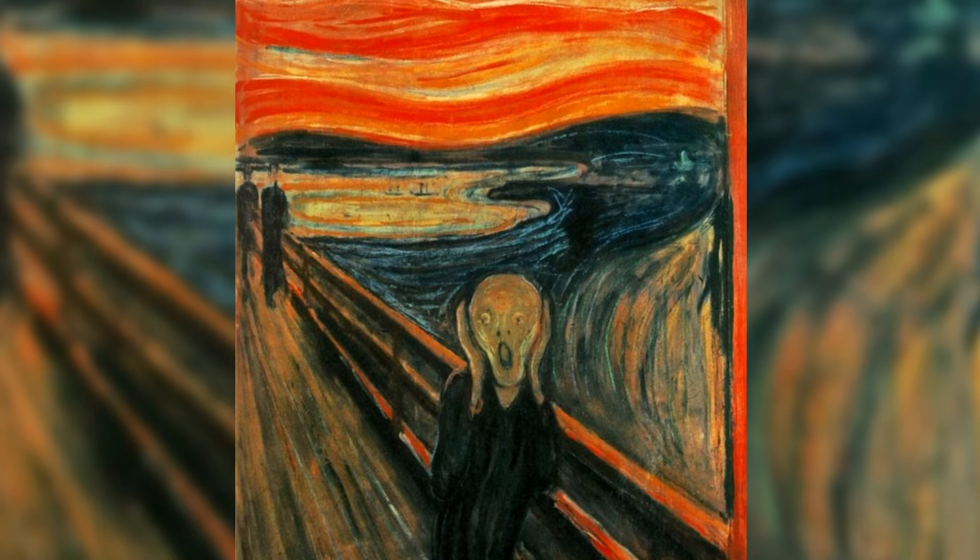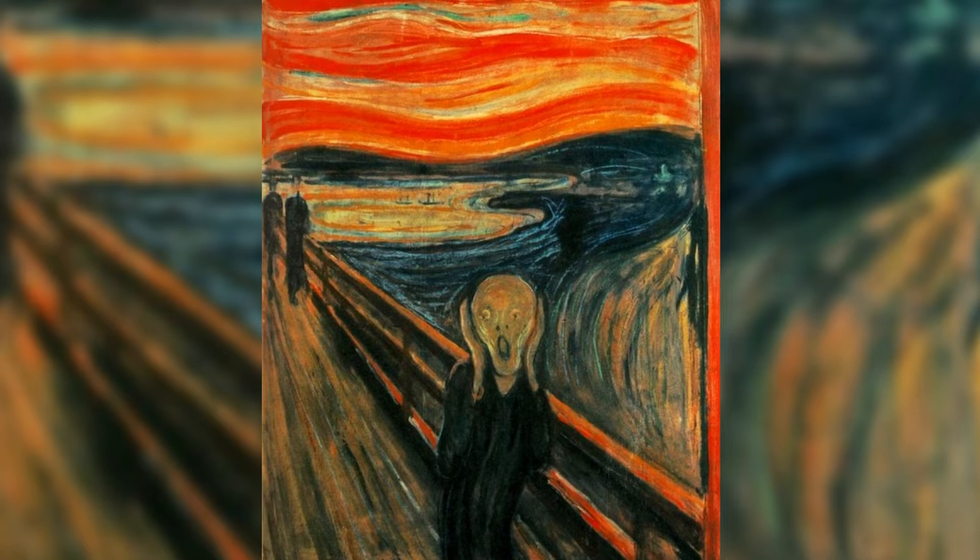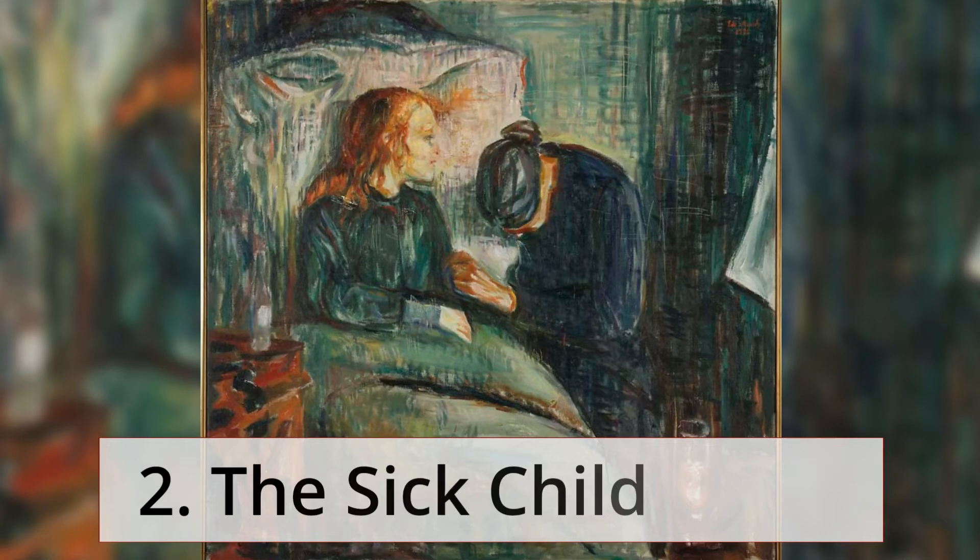1. The Scream. Munch reportedly painted this work after going on an afternoon stroll and realizing that the clouds had turned blood red. He heard a scream of nature, which is reflected by the agonizing face of the main figure in the work.